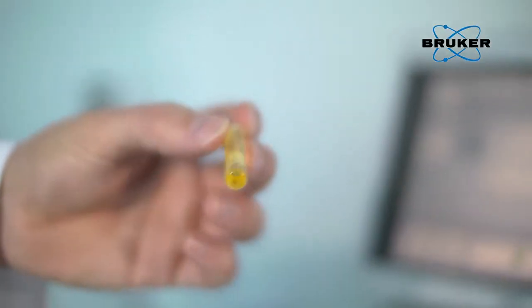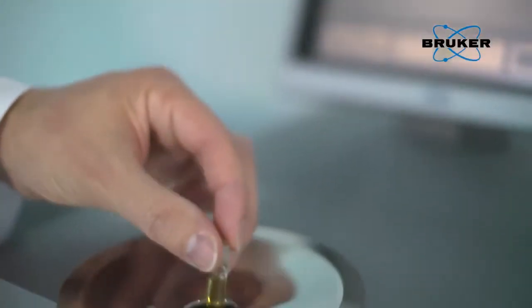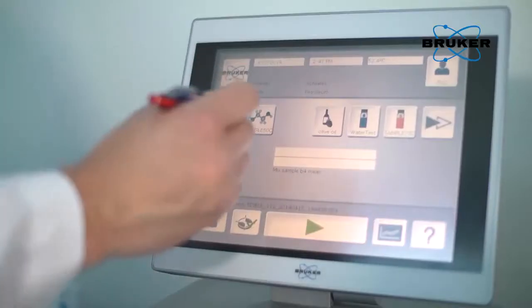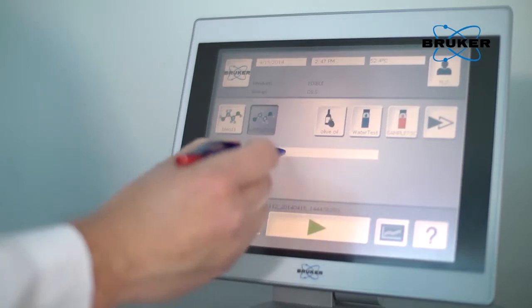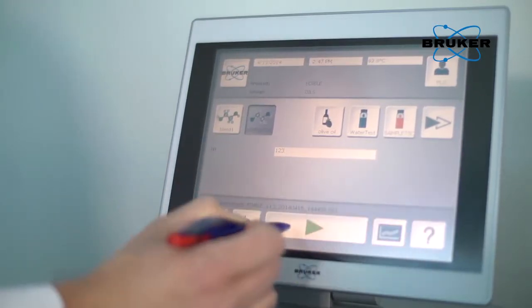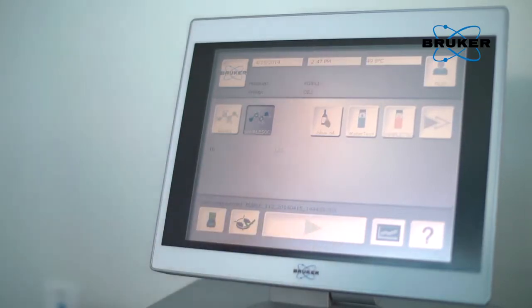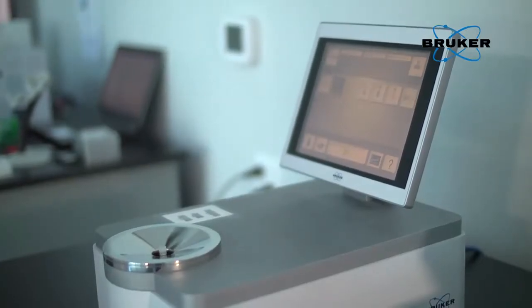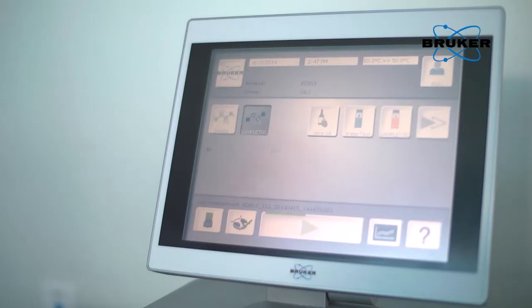The sample is simply filled into the measurement cup or sample vial and placed onto the spectrometer. The product is selected by either pressing on the respective product icon or by using a barcode reader. A simple touch on the screen starts the measurement. The progress is displayed through the green status bar. After approximately 15 to 30 seconds, the measurement is complete.